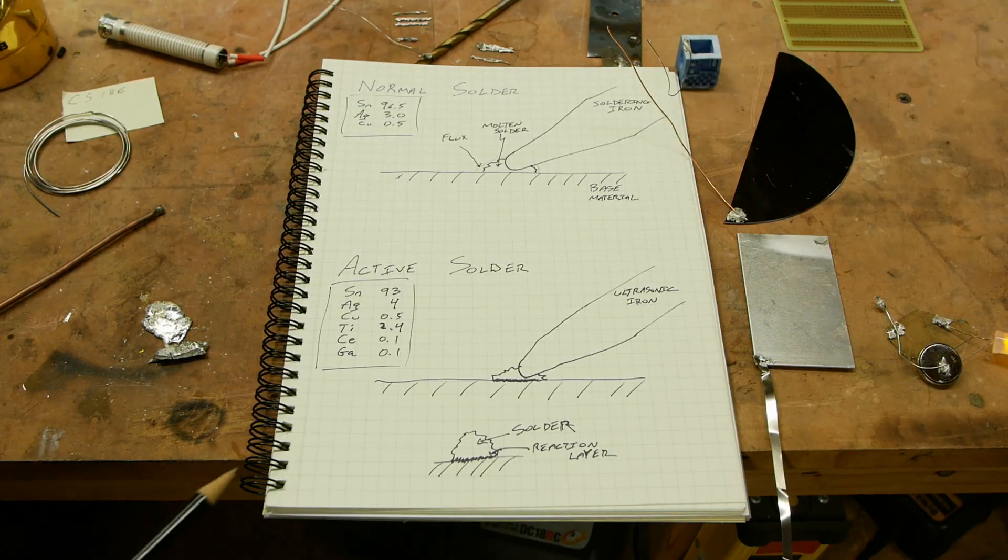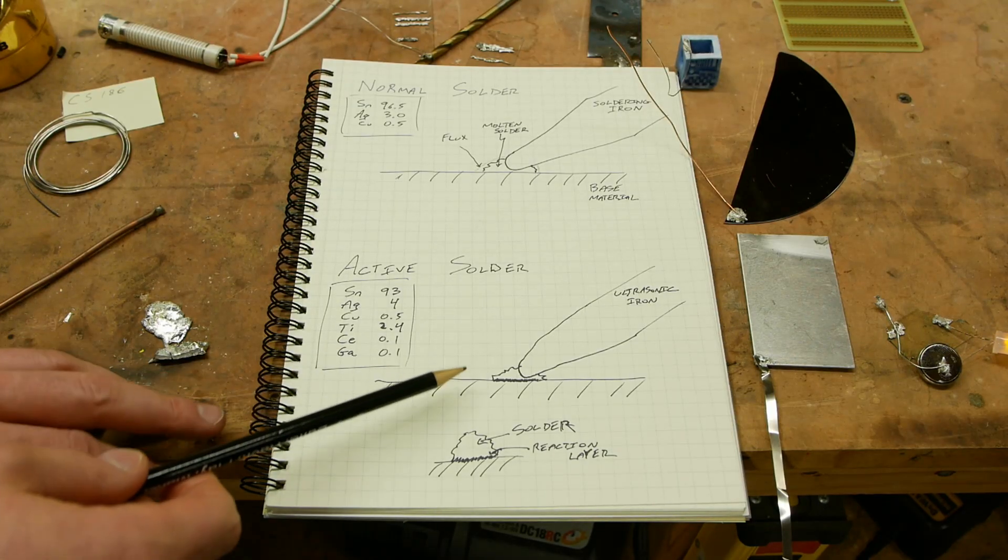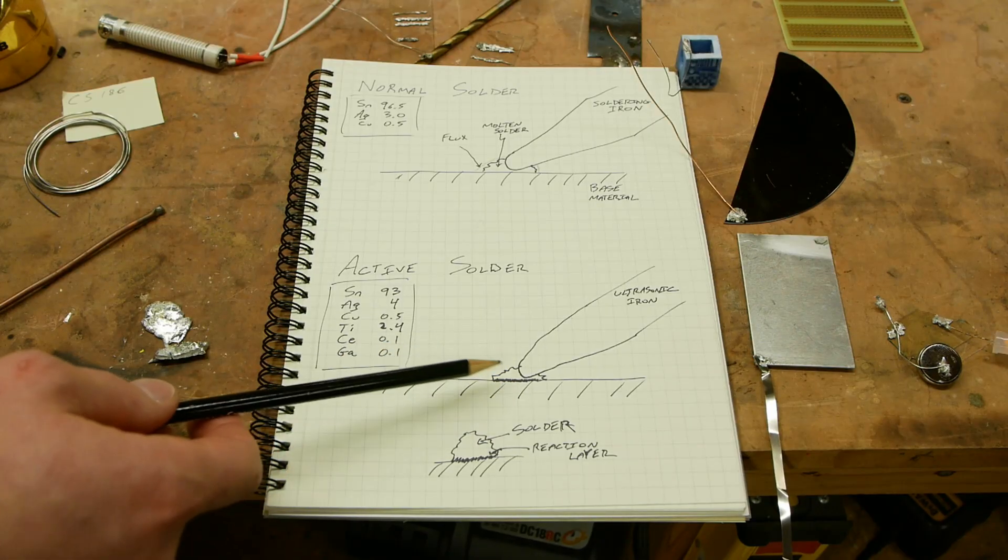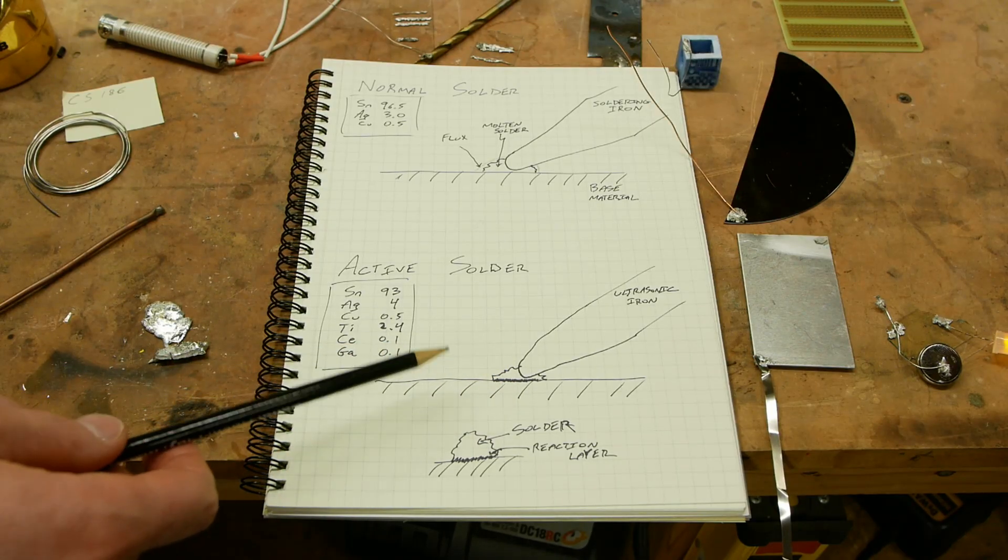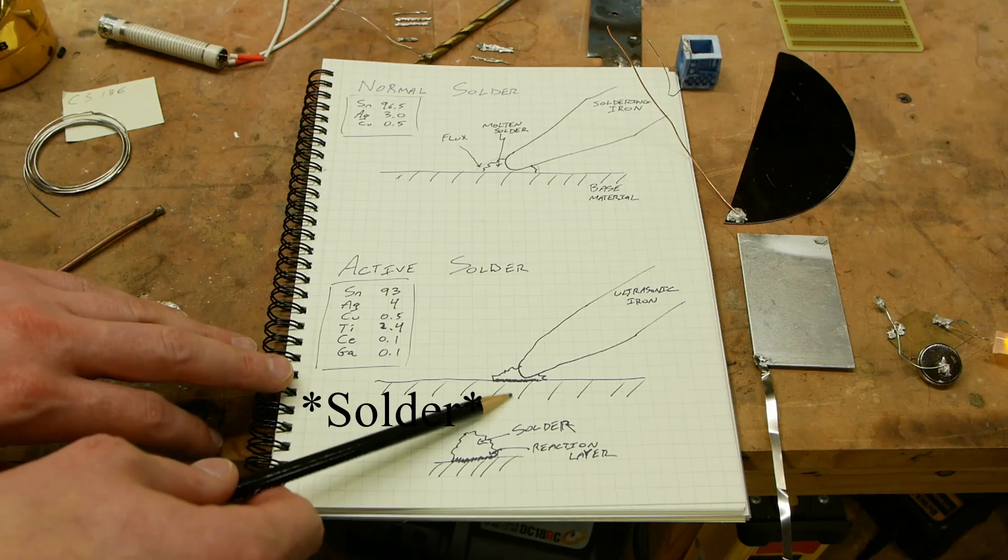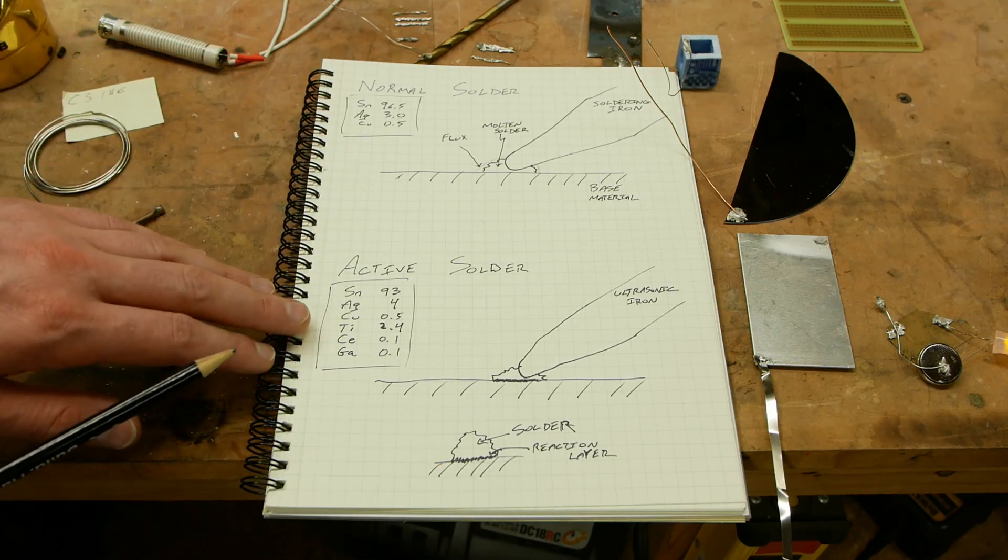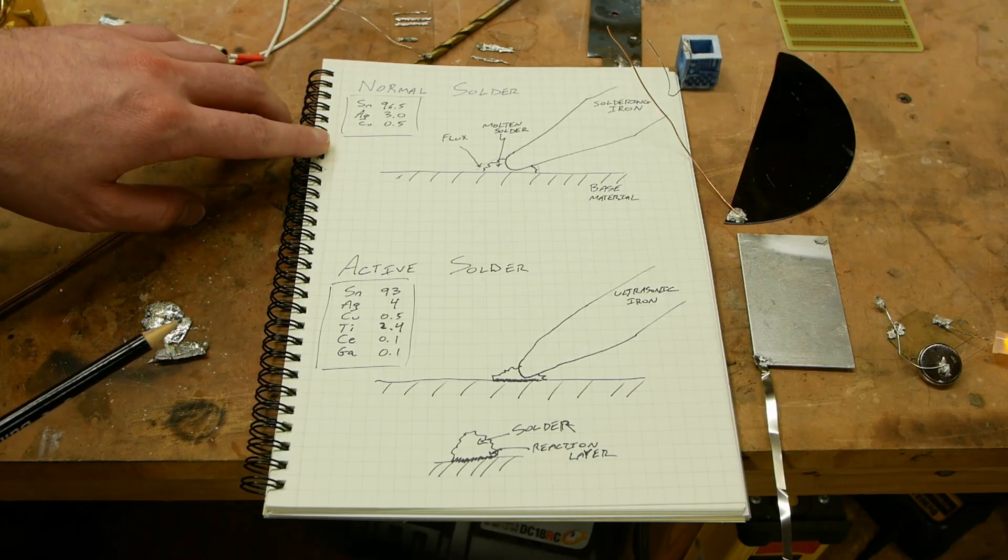When using an active solder, there is no flux. And so instead of trying to eliminate the oxides that are present on the materials here, we're actually going to use a chemical reaction between the ingredients in the flux and whatever oxides are present. And so if we look at the ingredients, they're actually very similar.